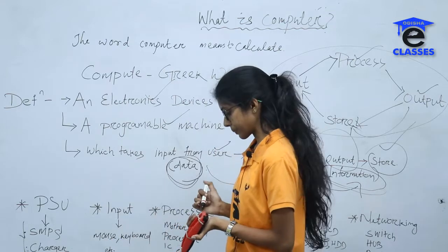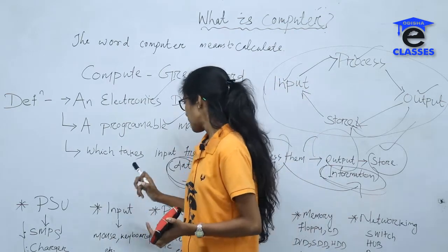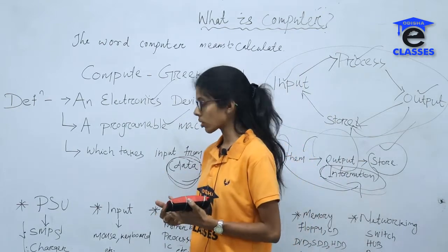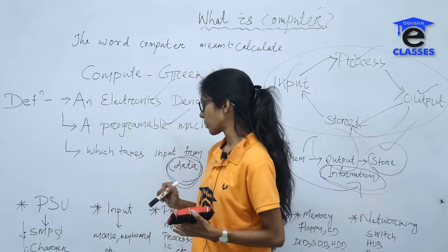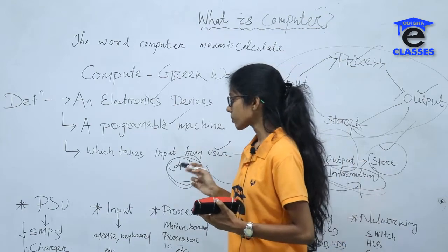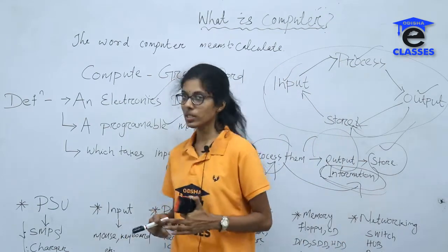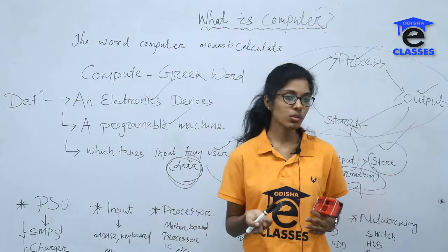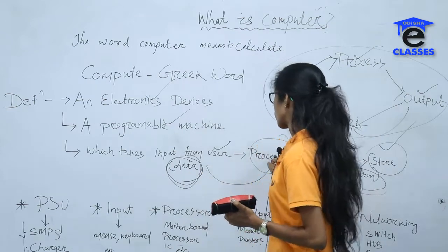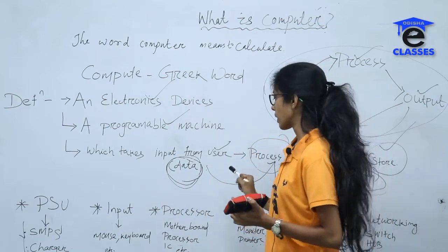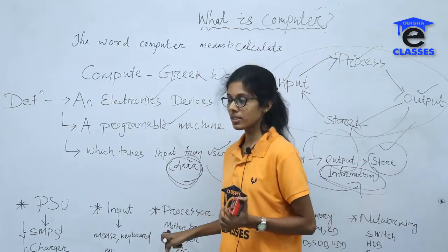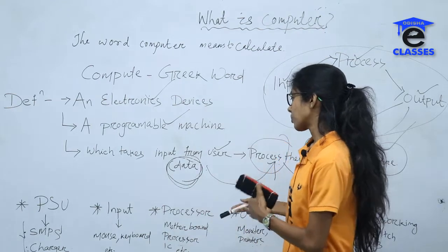Next, coming to the input device — we need to put data into the computer system. Input devices we can use include mouse, keyboard, and scanner. For processing, the computer uses a processor, mainly the motherboard, along with integrated circuits, RAM, and ROM.